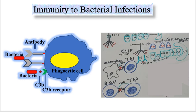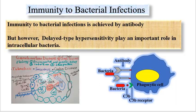In this lecture I'm going to talk about immunity to bacterial infections. As you may know, immunity to bacterial infections is achieved by antibody, but for intracellular bacteria the immunity is achieved through delayed type hypersensitivity. An example is infection by Mycobacterium tuberculosis, which is an intracellular bacteria.